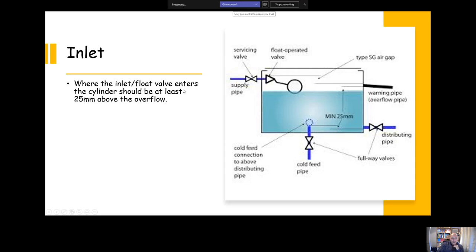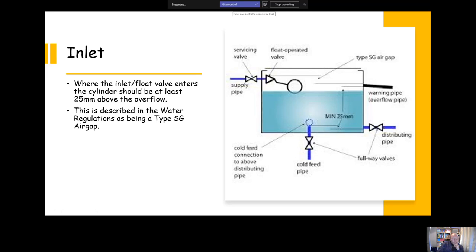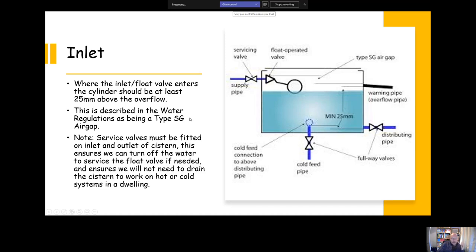For inlet, our inlet should be at least 25 mil above the overflow. Like I say, 25 mil is a key number for systems. If you get any questions in your test, if in doubt, pick 25. It would have an SG air gap, which basically means you've got a round overflow with at least 25 mil of a gap between the inlet and the overflow. The overflow should be sized to make sure it can cope with the flow of water should the inlet control device fail. Basically, you'd make it one size larger than the inlet. So if you have a 15 mil pipe coming in, you'd have a 22 mil overflow. If you had 22 mil pipe going in, you'd have at least a 28 mil overflow. Service valves, as I've already said, would be fitted on the inlet for servicing of the float valve and on the outlet so you can work downstream without having to drain the whole system.